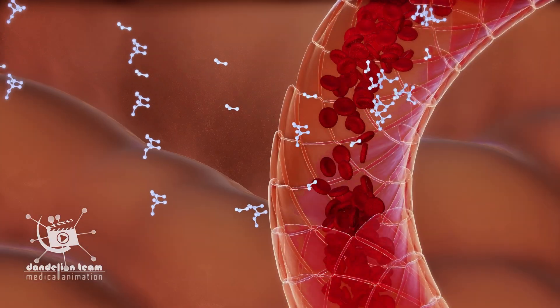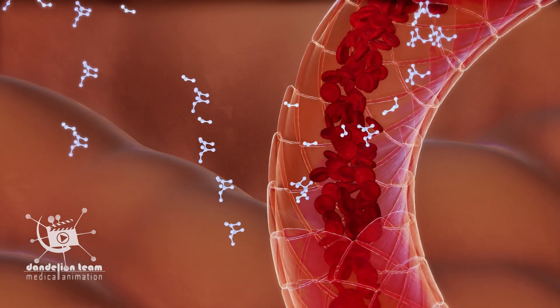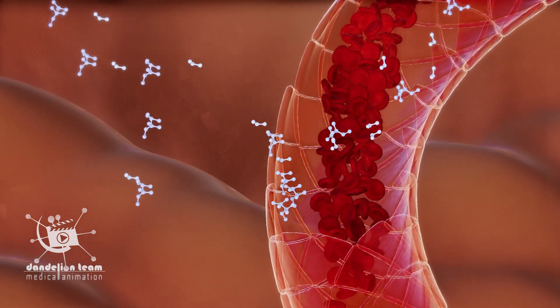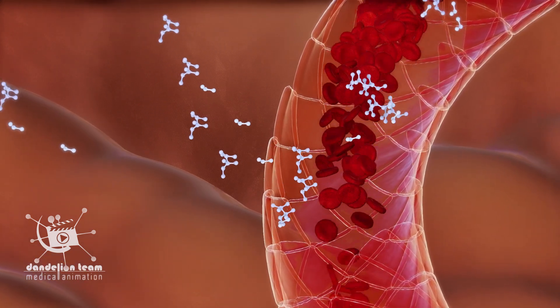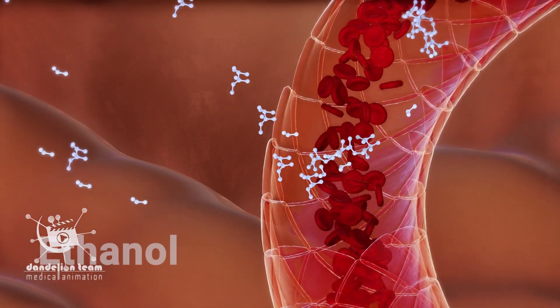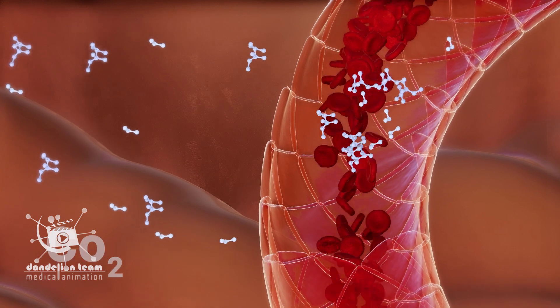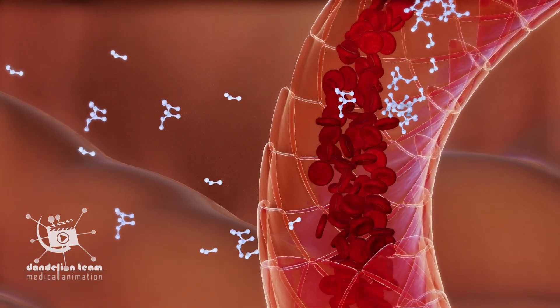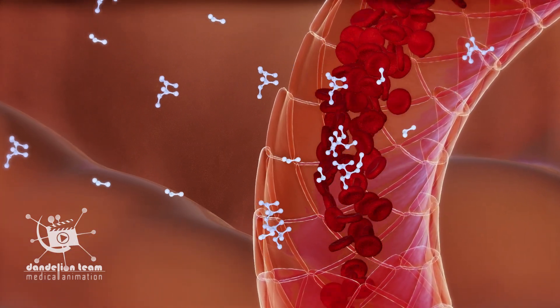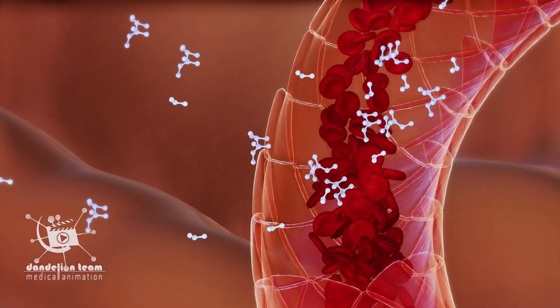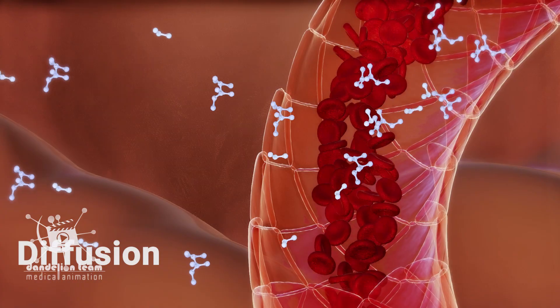The biological membrane structure allows small, uncharged molecules like ethanol, CO2, and water to pass directly through the membrane by the process of diffusion.